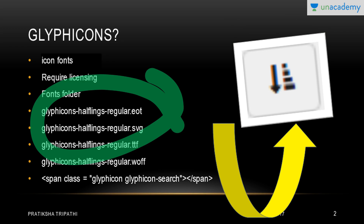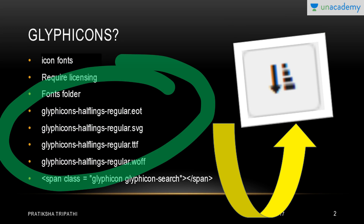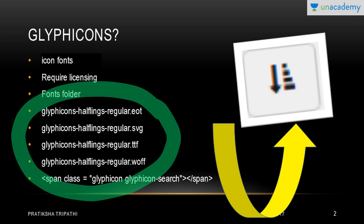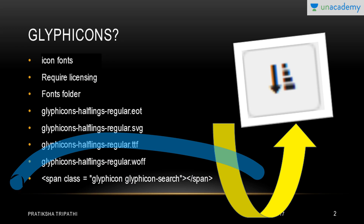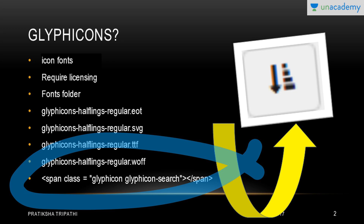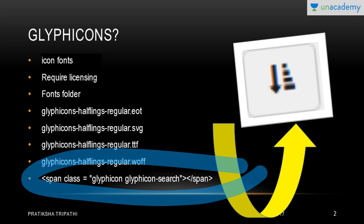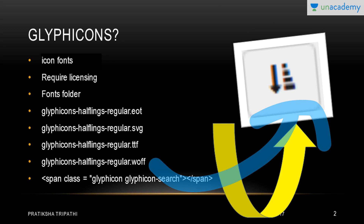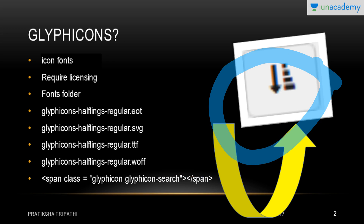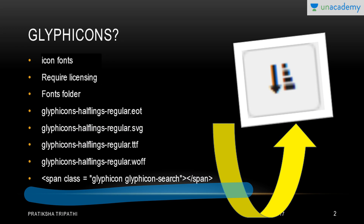The fonts folder consists of these glyphicon files: Glyphicons Halflings Regular EOT, Glyphicons Halflings Regular SVG, TTF, WOFF — all these are the different files glyphicons consist of. As soon as you open the fonts folder, you will see these different files. Now if I want to incorporate glyphicons in my webpage, I just write this statement in my code: span class equals glyphicon glyphicon-search and close span. If you include this line, a glyphicon like a search icon will be made.